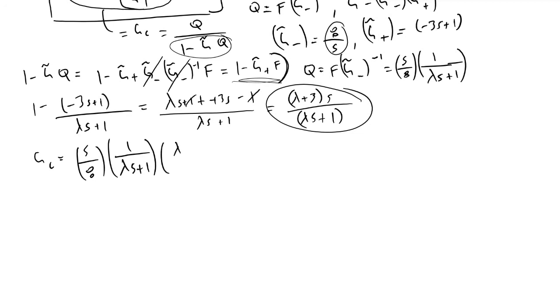So we'll have lambda S plus 1 over S times lambda plus 3. And what you'll notice, something very cool here is these terms cancel, and this S also cancels. And what we're left with is 1 over 8 times the quantity lambda plus 3.